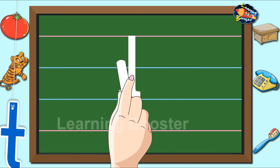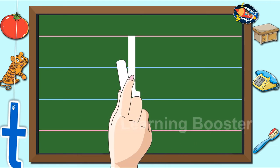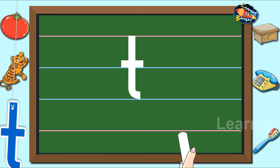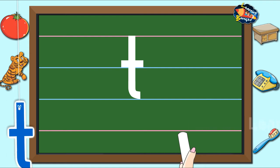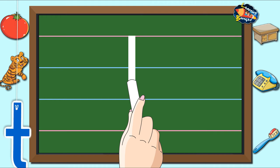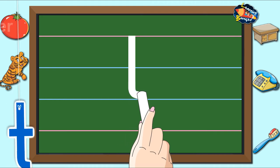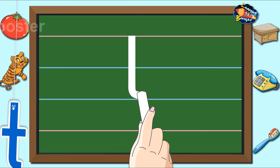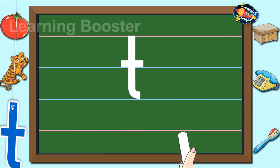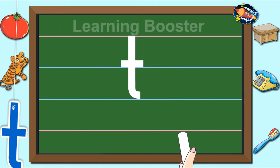Then go to the base line and make a short sleeping line across. Let us look at it once more. A standing line with a curl to the right and a short sleeping line in the center makes letter T.